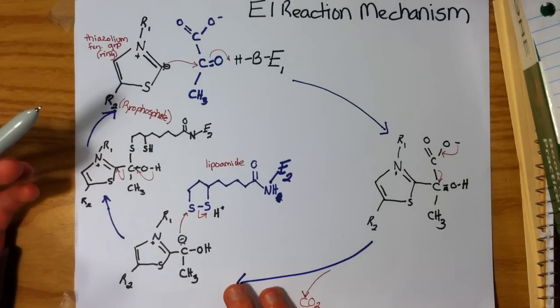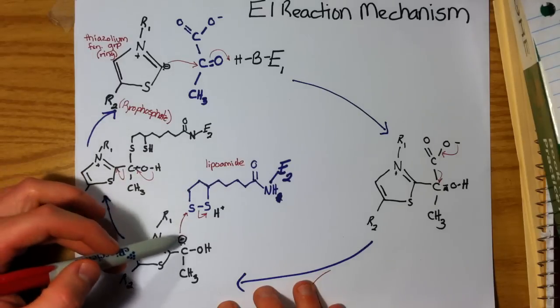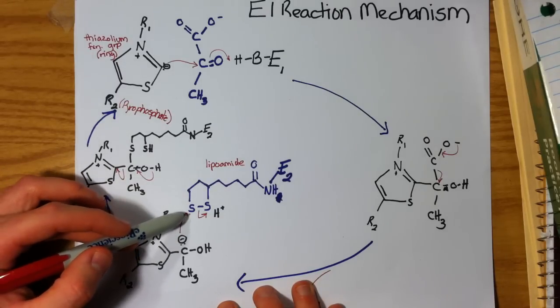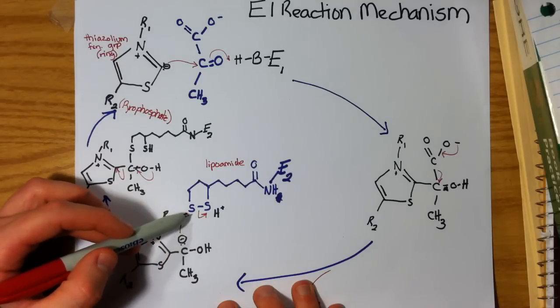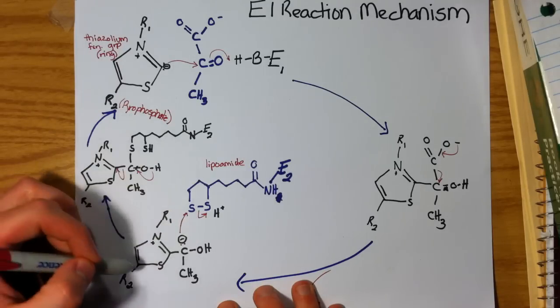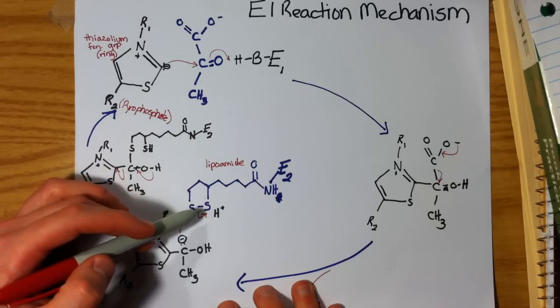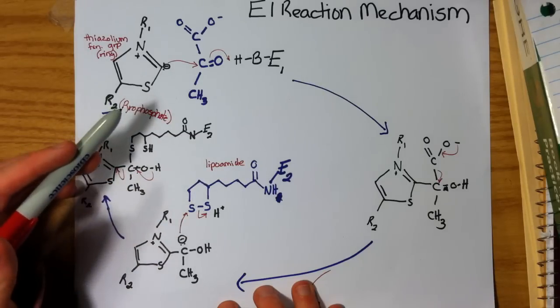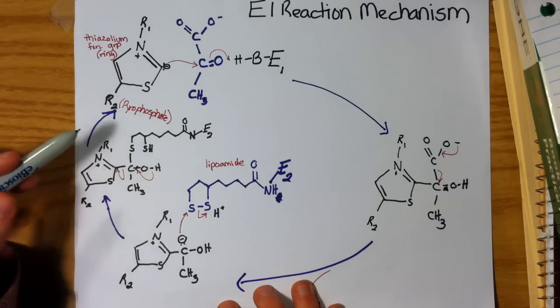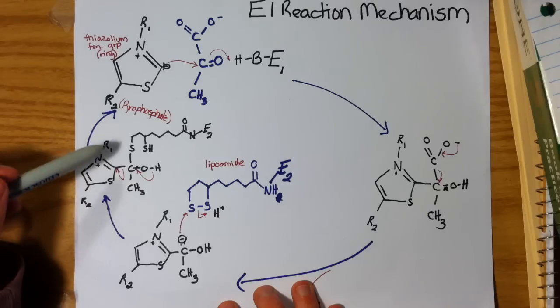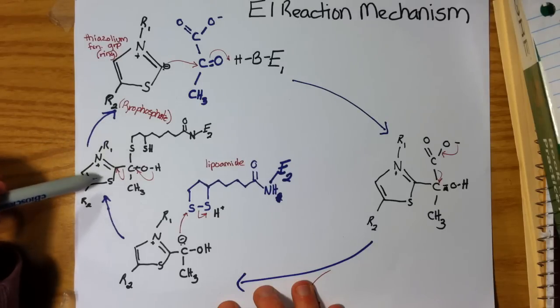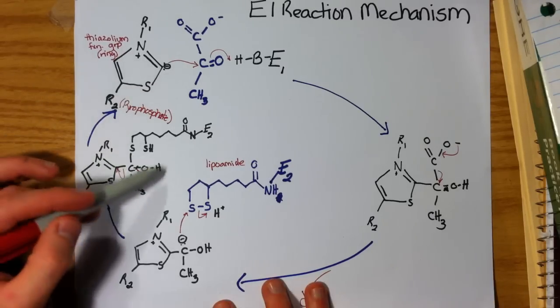And it does this with this carbanion attacking and breaking up this disulfide bond on lipoamide. The one sulfur group gets bound to our carbon and our TPP temporarily. And the other sulfur picks up a hydrogen from solution, leaving us with this step where we have our E2 and E1 complex bound through this acetyl group intermediate.